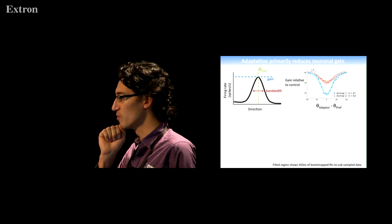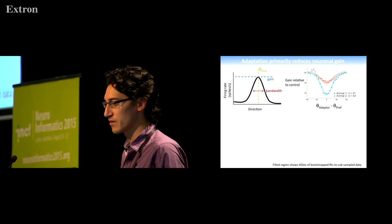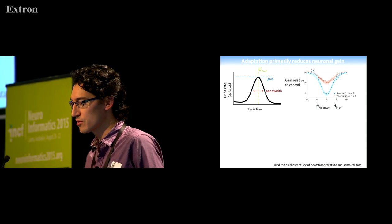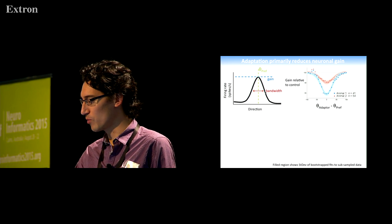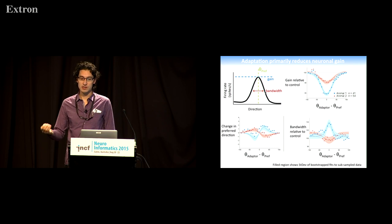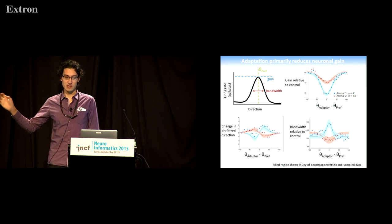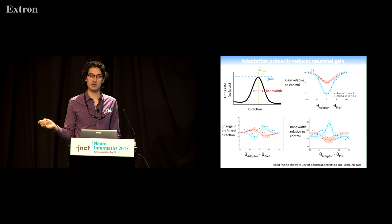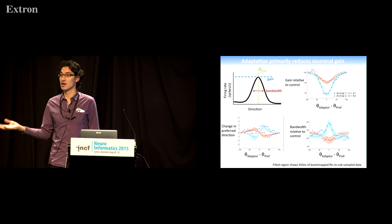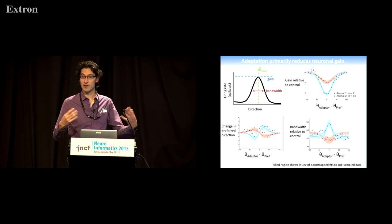Across the population, we see robust reductions in gain as a result of adaptation. What's shown on the x-axis is the difference between the adaptation direction and the preferred direction. When the adapter matches the preferred direction, we get the maximal reduction in gain. I've got two animals here; we have a third animal now and it shows an intermediate effect, so this is a very robust, highly statistically significant effect. But we don't see similar changes in either preferred direction or bandwidth. We've fit curves here; we get statistically significant changes, but we've got so much data that it's very easy to get a statistically significant effect. When we look at the effect size, it's trivial. From now on, I'm just going to focus on the effects of changes in gain and ignore changes in preferred direction or bandwidth.